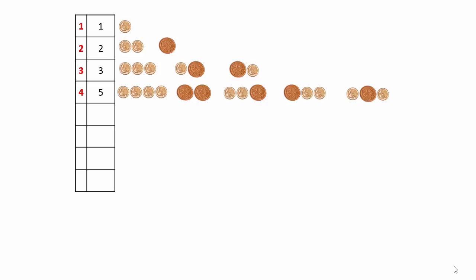For a total of one, there's really no choice—there's only one way of doing that, and that is to use one one-cent coin. For a total of two, there are two ways: we can use two one-cent coins or one two-cent coin. For three, there are three ways as you can see, and for four, there are five ways.